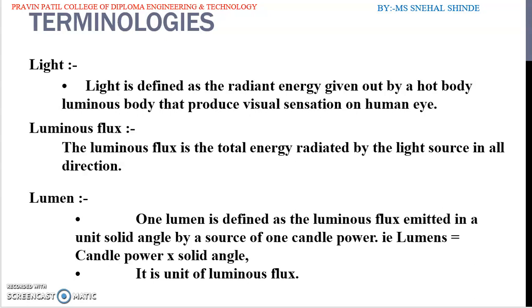Next definition is lumen. Lumen is the unit of luminous flux. It is defined as amount of luminous flux given out in a space represented by one unit of solid angle by a source having an intensity of one candle power in all directions. The formula for lumen is candle power into solid angle. Flux emitted by a source of one candle power is equal to 4 pi lumens.